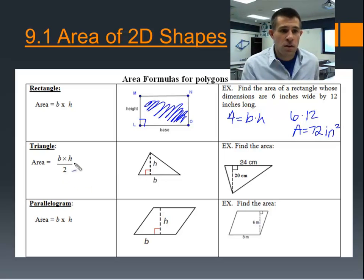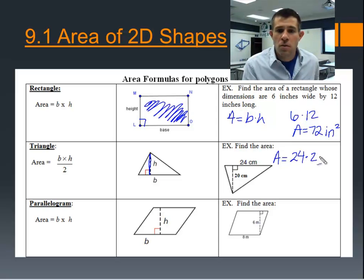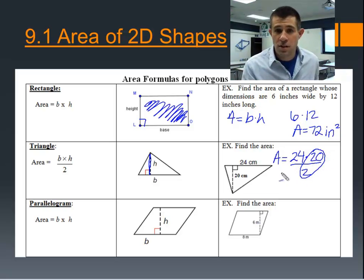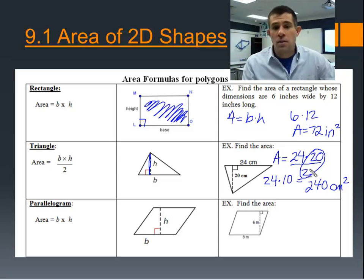For the area of a triangle, we use base times height divided by 2. For a triangle, the base and height must always be perpendicular to each other, intersecting at 90 degrees. Find the area of this triangle whose base is 24 and height is 20. Plugging into the formula: 24 times 20 divided by 2. Simplifying 20 divided by 2 first gives 24 times 10, which equals 240 centimeters squared. Alternatively, 24 times 20 is 480, and 480 divided by 2 is still 240 centimeters squared.